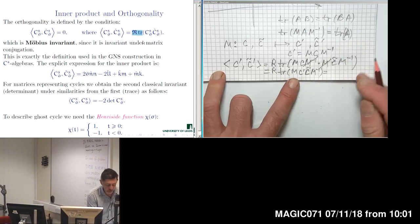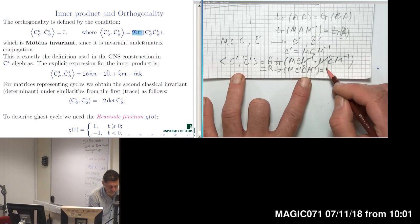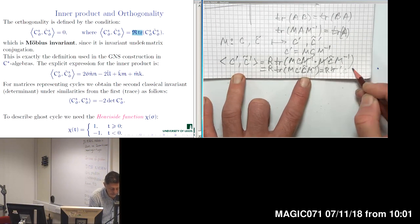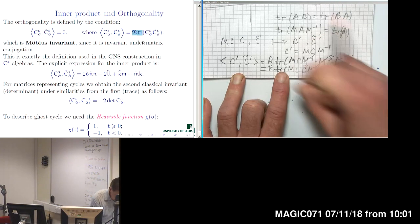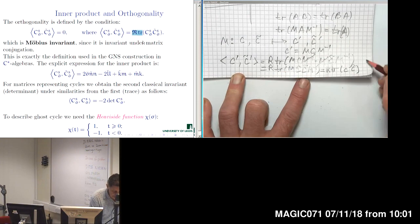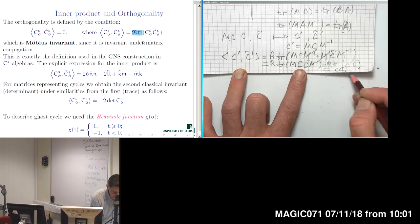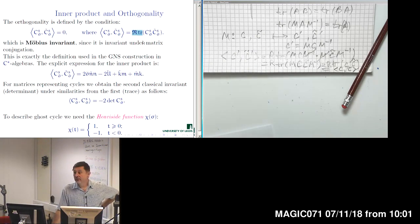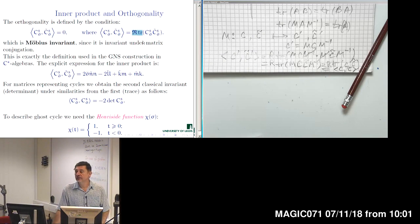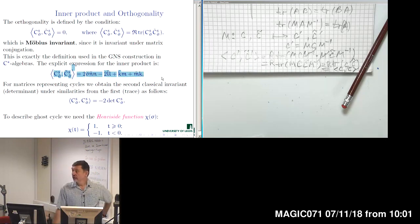When we take the real part of trace(M C C-tilde M⁻¹), the invariance of trace with respect to matrix conjugation tells us we have the real part of trace(C C-tilde), which is just the inner product of C and C-tilde. Here it is given explicitly in terms of coefficients of cycles C and C-tilde. It is not positively defined — we have not only pluses but also minuses.